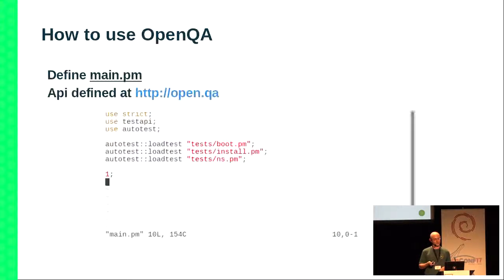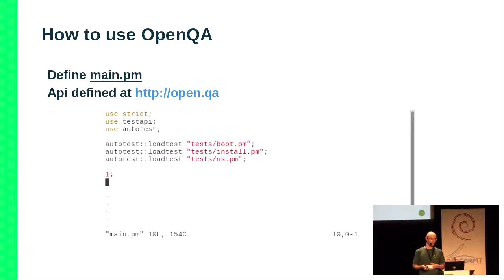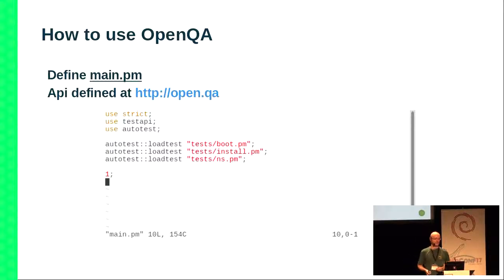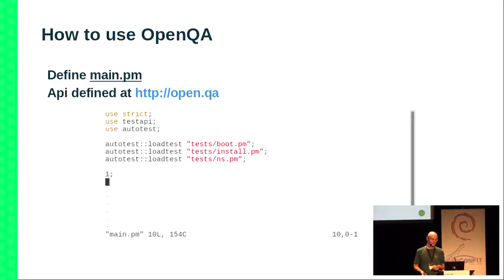How do you define a test in OpenQA? The first file you look for is called main.pm — that's the main file that loads. Here you can define a test, but the best way is to just load another test file. You use the API to load, for example, the installation test. I just have three separate test suites: one for booting, one for installing, and one for booting into the desktop and checking whether everything is fine. Those are the three files to define — just file names, nothing special.